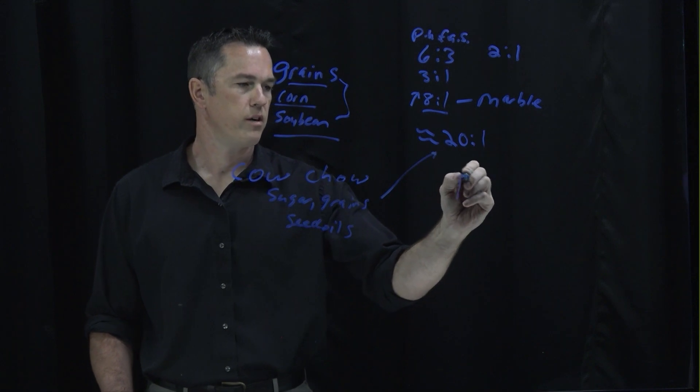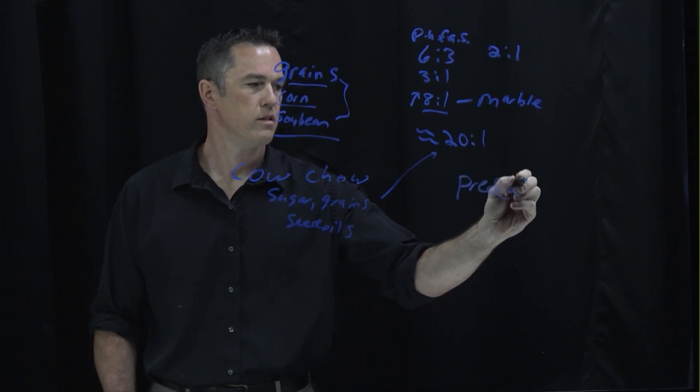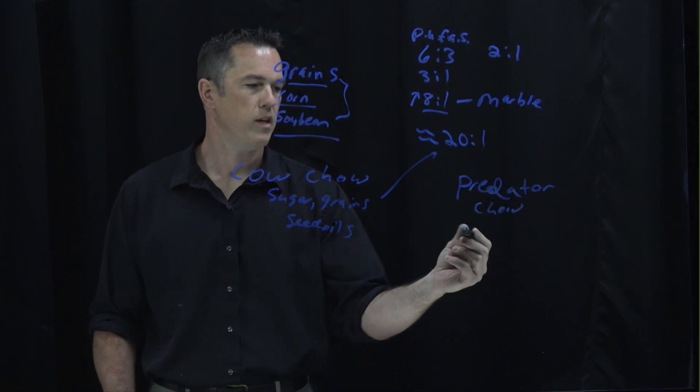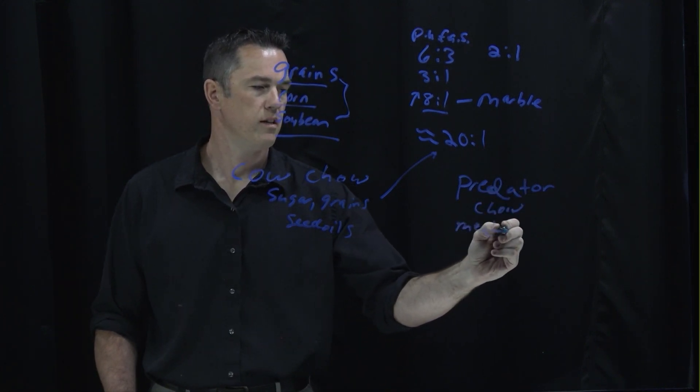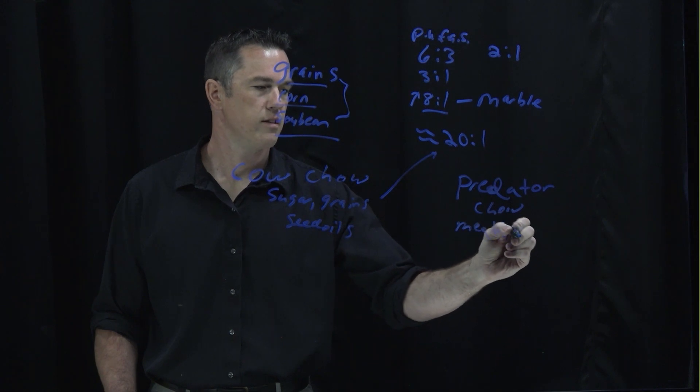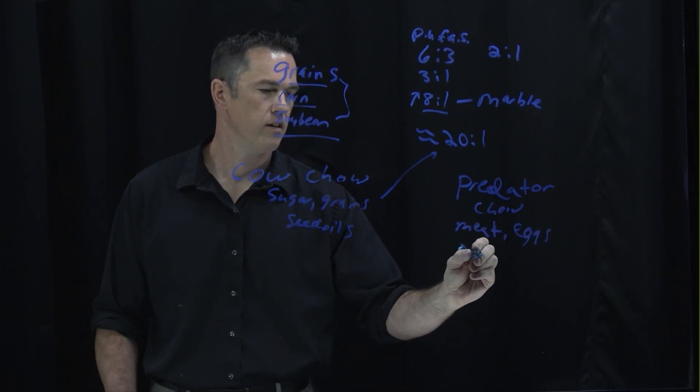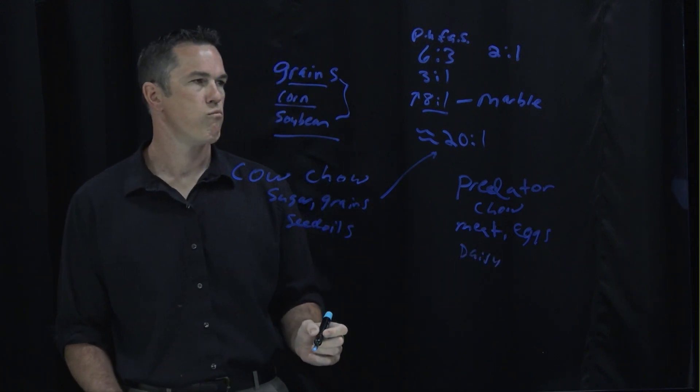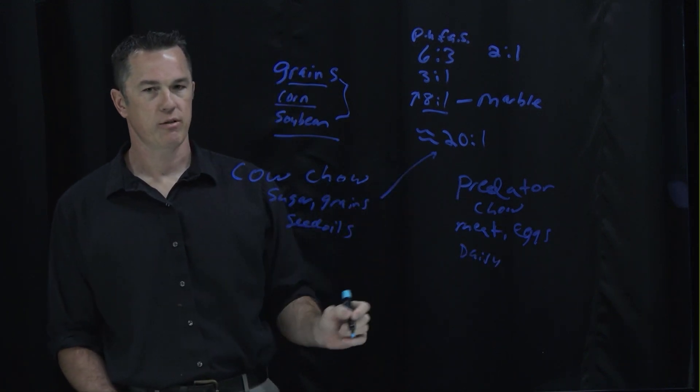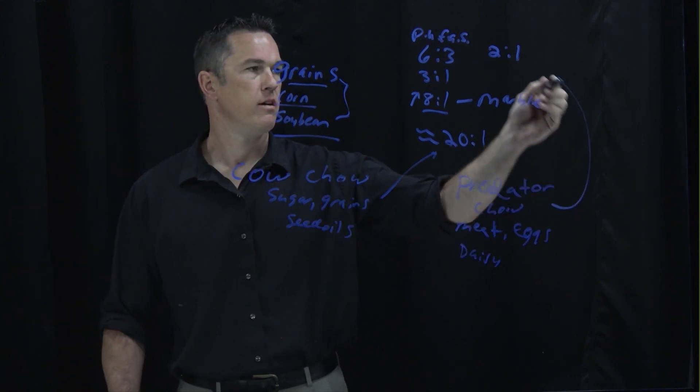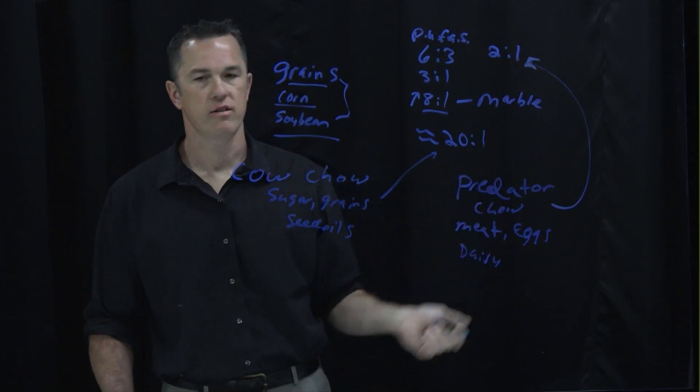If you eat predator chow, which is going to be meat, eggs, dairy, and these animals that you're eating are properly fed their proper diet, you end up here, and you stay lean and healthy.